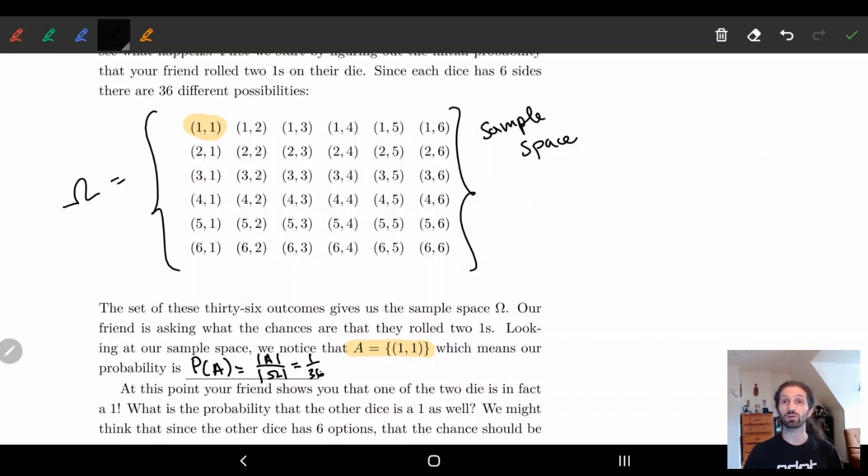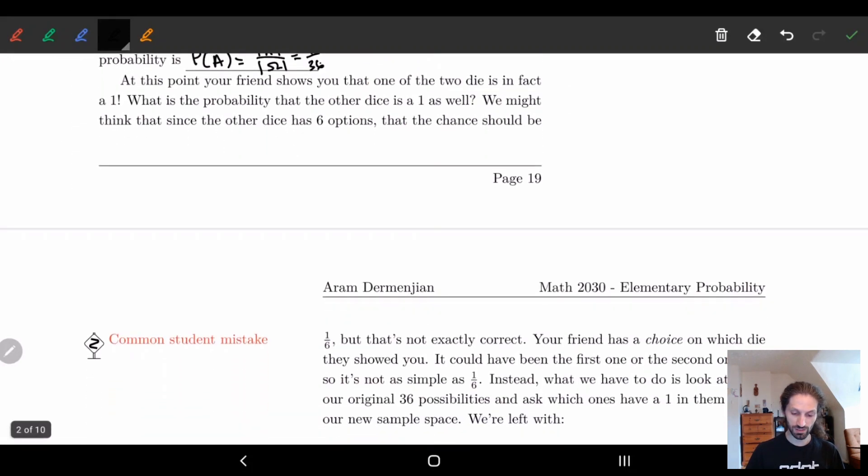And so this is where things now get a little more difficult. So at this point your friend basically says okay I'm going to show you one of the two dice.